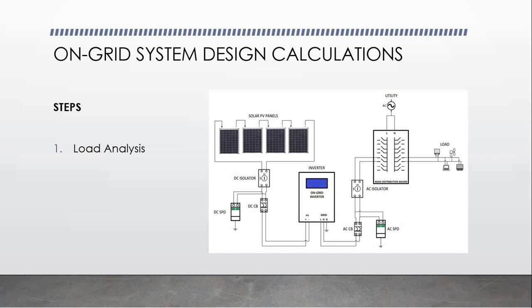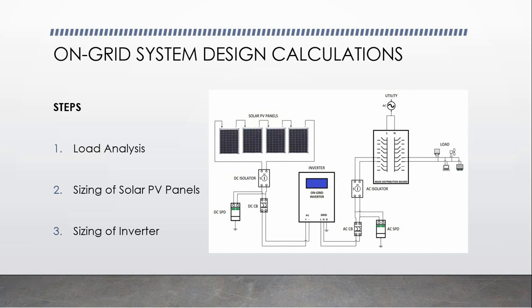The on-grid setup is mainly composed of a solar panel array and an on-grid inverter. The on-grid system is the simplest of the three types of setups, and we just need three steps to do this. Step one is the load analysis. Step two is the sizing of your solar PV panels or solar array. And step three is the sizing of your on-grid inverter.